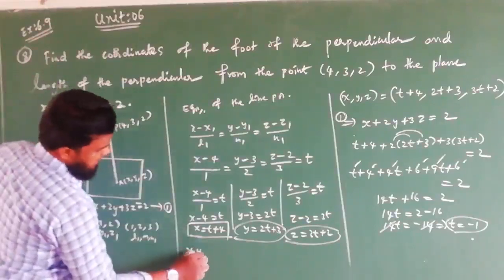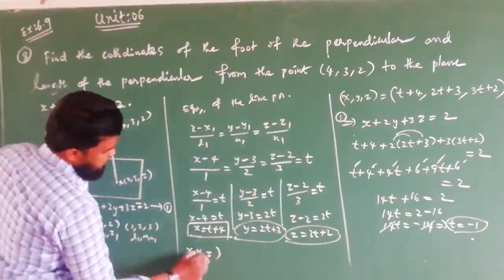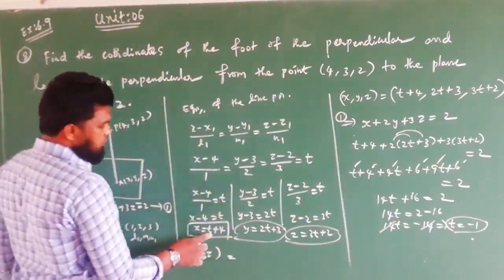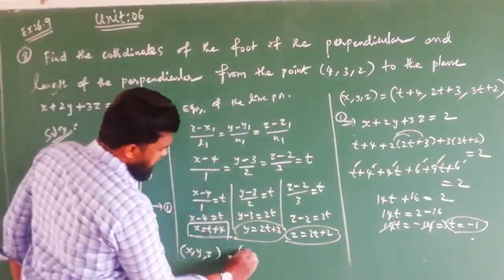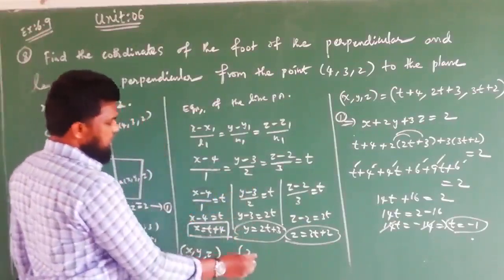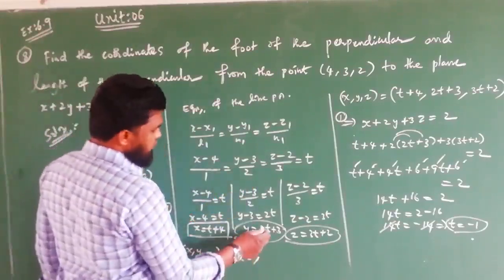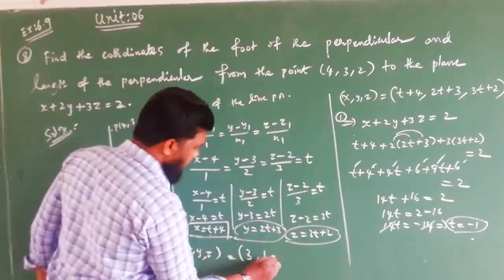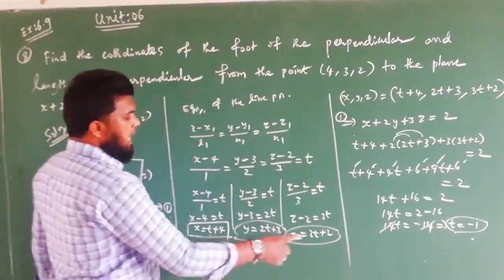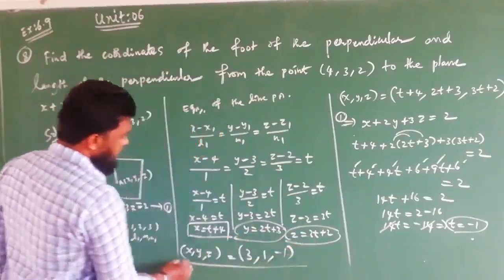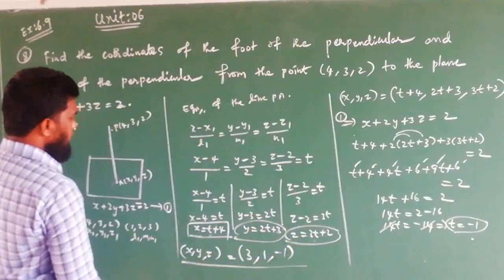Putting T equals minus 1 into x, y, z: x equals minus 1 plus 4 equals 3, y equals 2(minus 1) plus 3 equals 1, z equals 3(minus 1) plus 2 equals minus 1. So the foot of the perpendicular is (3, 1, minus 1).